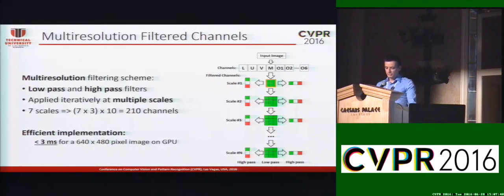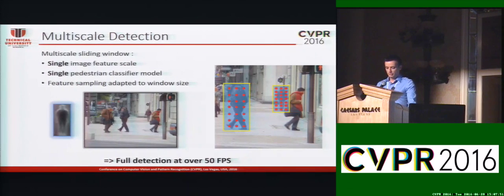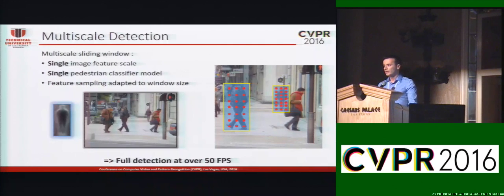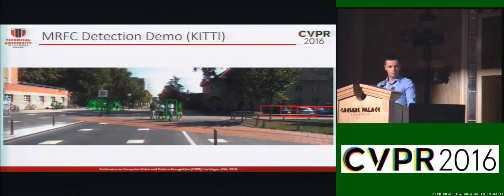To achieve multi-scale detection, we use a single image scale and apply sliding windows at multiple scales. The classification features are sampled grid-wise from these multi-resolution filter channels, and the sampling grid is adapted to the size of each detection window. This way, we are able to detect multi-scale objects using the same flexible classifier model, and detection is achievable at over 50 frames per second on a GPU.